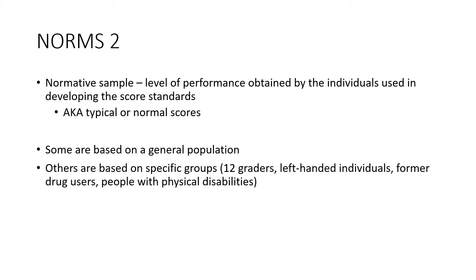Others are based on specific groups — such as 12th graders, left-handed people, former drug users, or people with physical disabilities — so we compare those specific groups. For example, if you test a group of non-drug users and then test someone who uses drugs, their scores could be very different. You can't compare people from totally different backgrounds and say they're equal, because they have different lives.